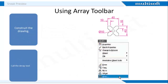Now let's discuss how to use the Array toolbar. Arrays can either be in a rectangular form or a polar form. The Array command allows you to create duplicates of existing objects in a rectangular or circular pattern.